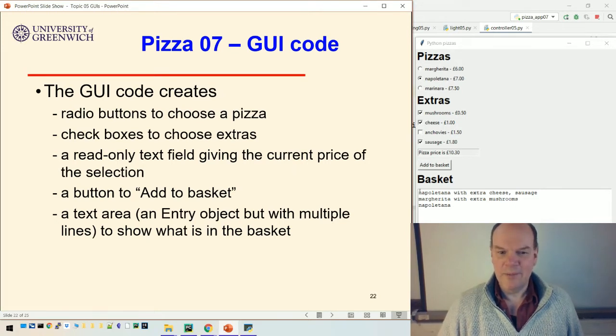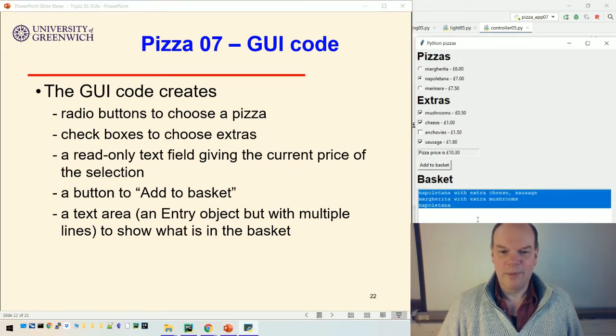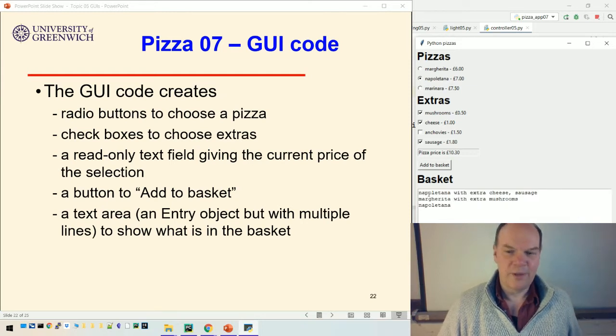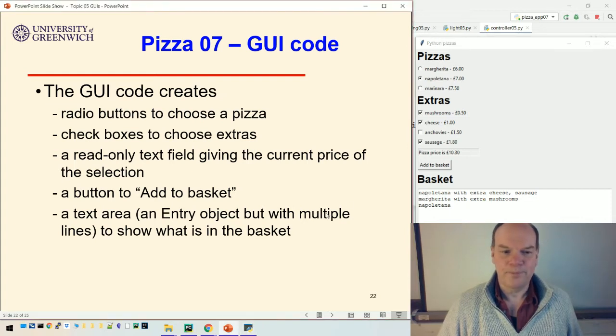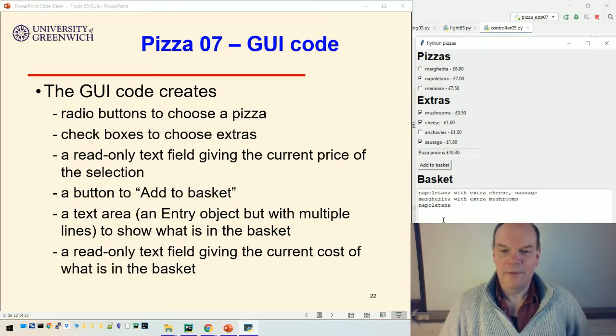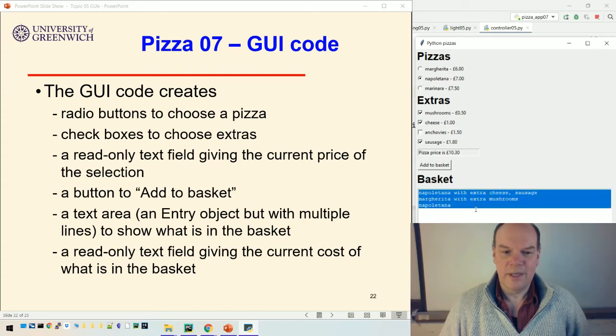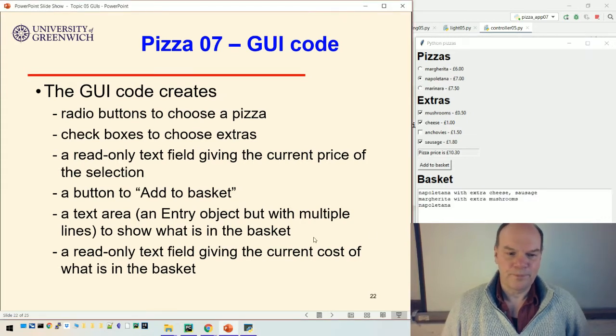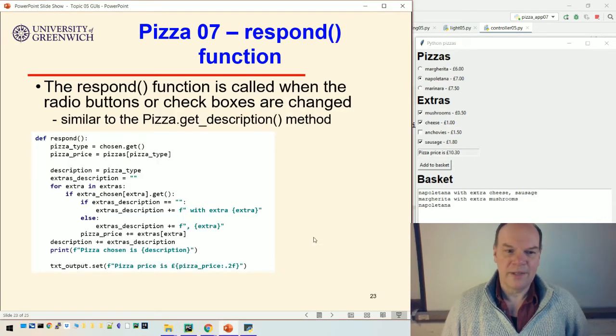We haven't seen one of those, but this is an entry object, it's got multiple lines and a text area where we record the contents of the basket or we report the contents of the basket to the user. And finally, there's a read-only text field which just adds up all of the total contents of what's in the basket, and there it is.